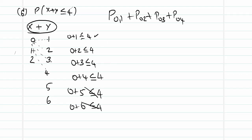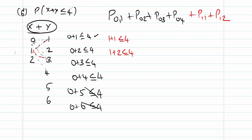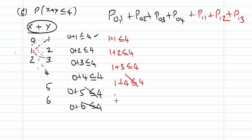For X = 1: 1+1 ≤ 4 ✓, take P(1,1); 1+2 ≤ 4 ✓, take P(1,2); 1+3 = 4 ≤ 4 ✓, take P(1,3); 1+4 = 5, not ≤ 4, ignore; 1+5 and 1+6 are also greater than 4, so ignore those.